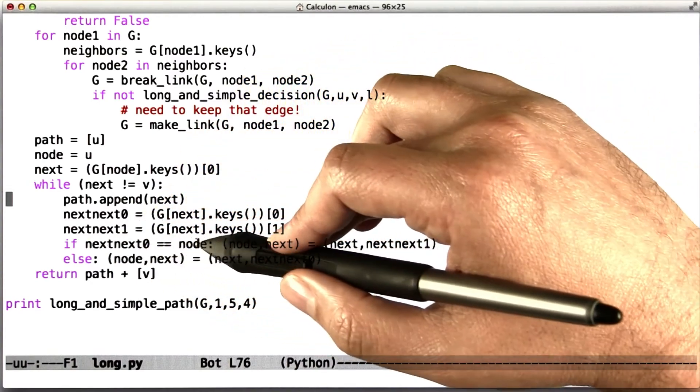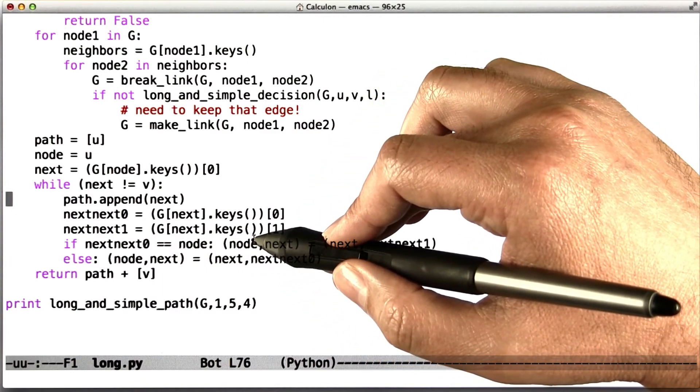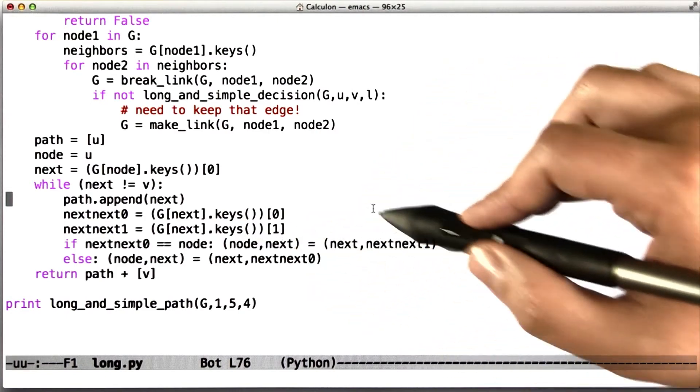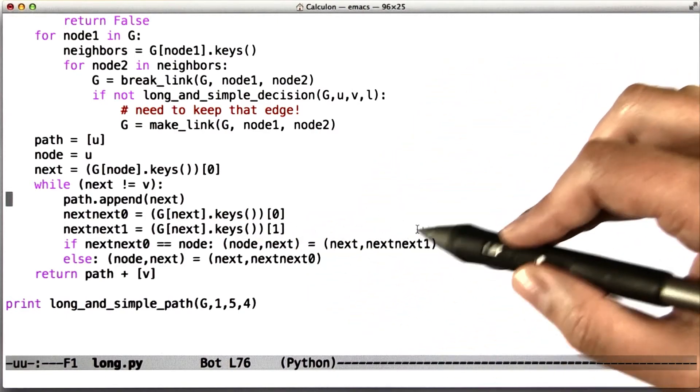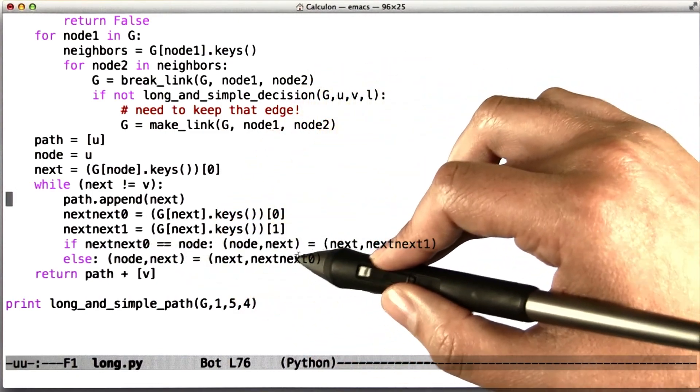If next_next[0] is the node we just came from, then we're going to move one step along the chain. Node gets next, and next gets next_next[1], the one that we haven't visited, and otherwise, next gets next_next[0], the one we haven't visited.